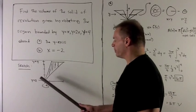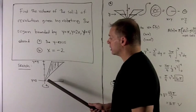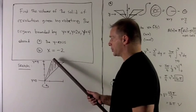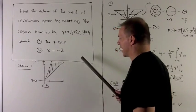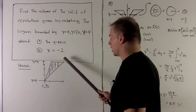I first sketch my region, so we'll have the line y equals x, the line y equals 2x, and then it's going to be cut off at the top by the line y equals 4, so we get a triangle.